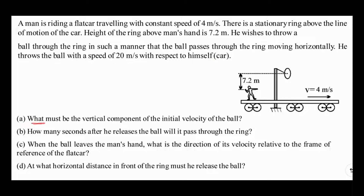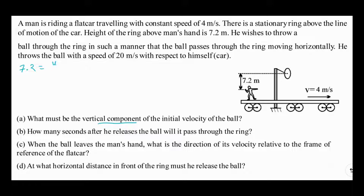In the first part, we must find the vertical component of the initial velocity of the ball. When the ball passes through the ring, its vertical component should be zero, meaning the maximum height reached is exactly 7.2 meters. Using the formula: maximum height = uy² / 2g = 7.2 meters, we can easily calculate uy, the vertical component of initial velocity.